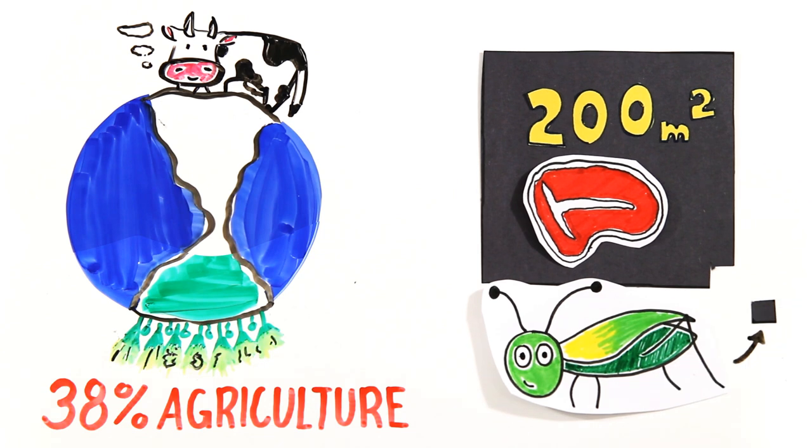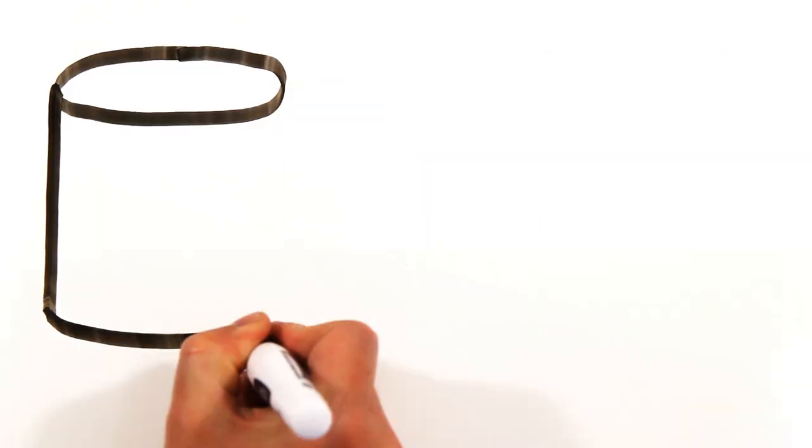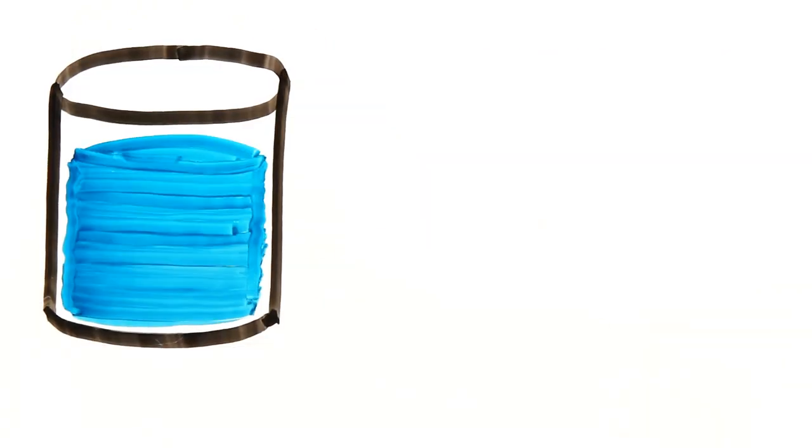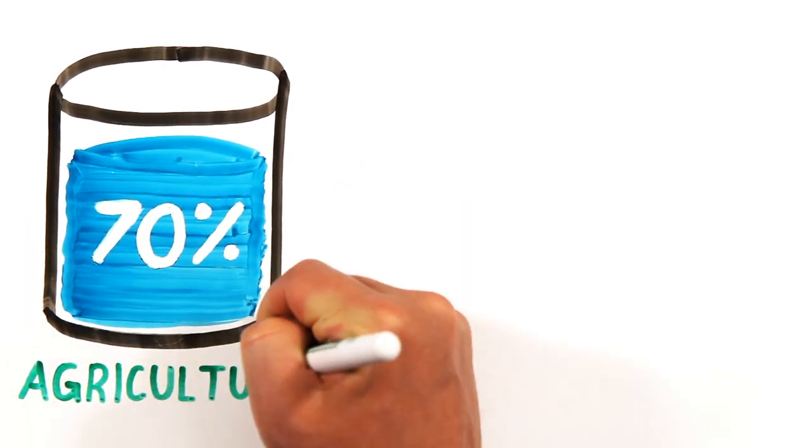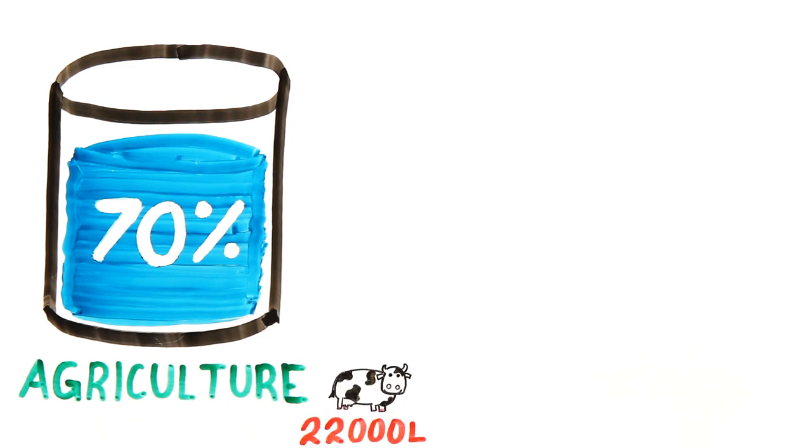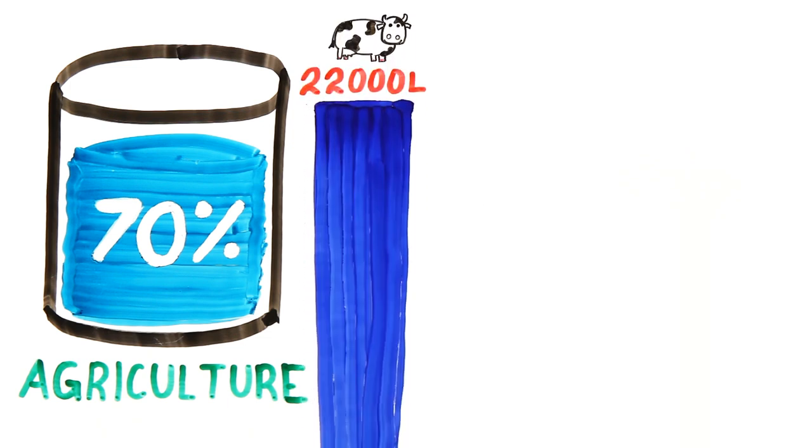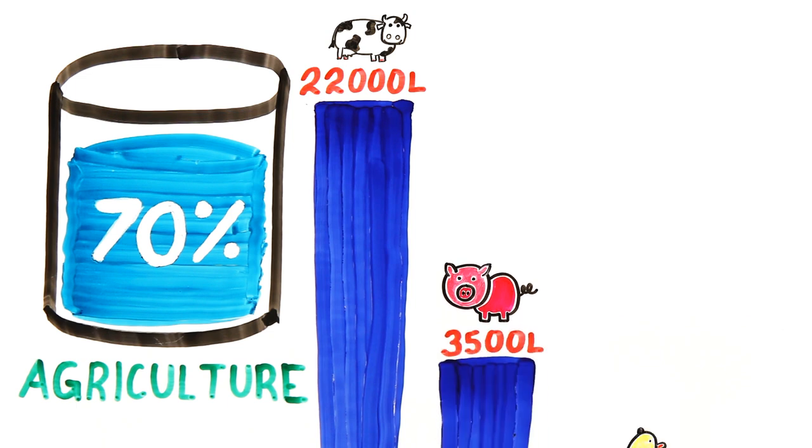By 2025, it's expected that 1.8 billion people will live in areas with little to no fresh water. And yet, 70% of our fresh water sources are used in agriculture alone. To produce 1 kilogram of beef, it takes 22,000 liters of water, whereas 1 kilogram of pork takes 3,500 liters and 1 kilogram of chicken takes 2,300 liters.